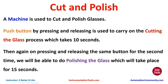For this example we will be using normally open contacts as well as normally closed contacts. We will also be using some memory bits and implementing logic gates like AND and OR. We will also be using timers. Let's move to EcoStructure Machine Expert where we will draw a ladder diagram for the automatic cutting and polishing machine.